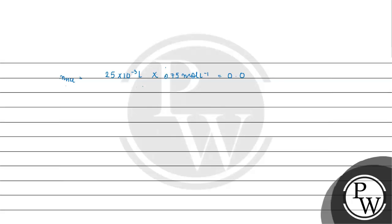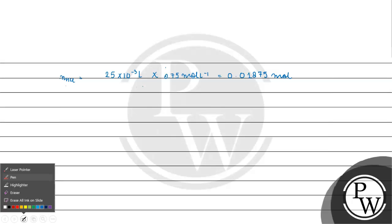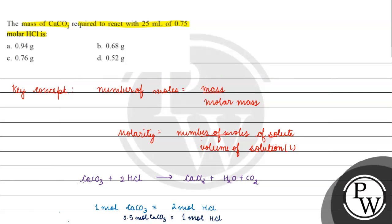How many moles will be? 0.01875 moles of HCl.